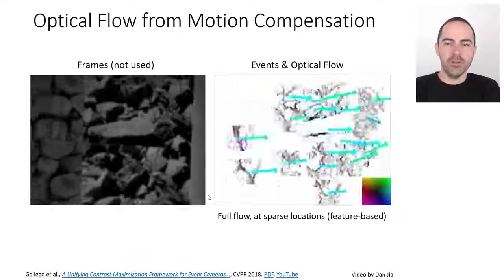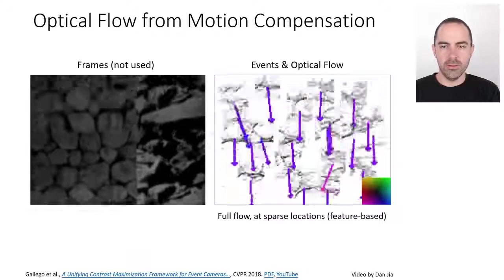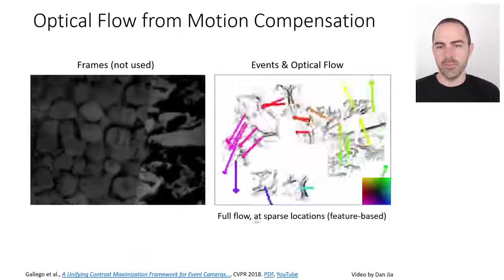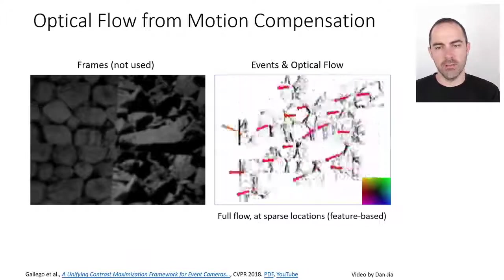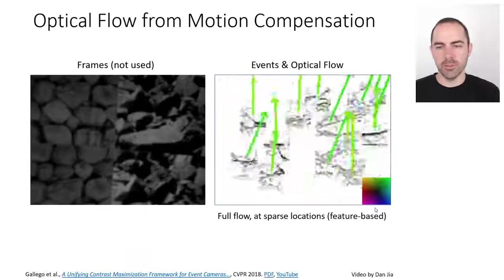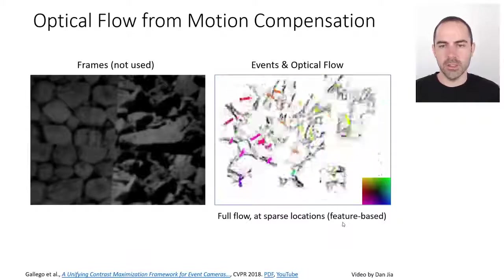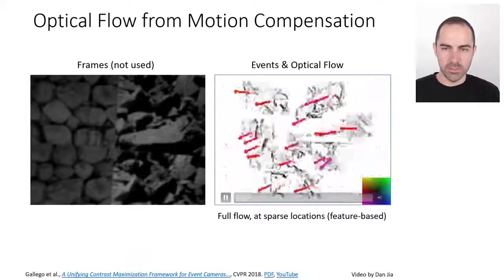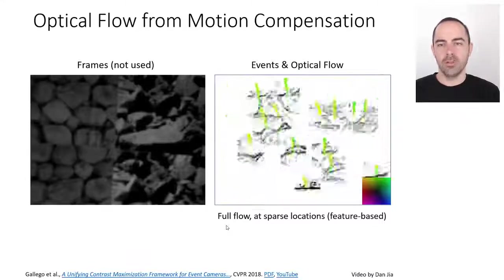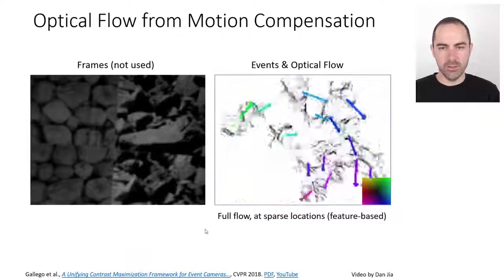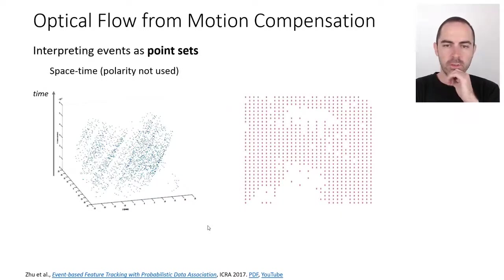An example video shows this done for patches of roughly 20 by 20 pixels. The motion-corrected patches are shown along with flow direction encoded in a color wheel and arrow magnitude representing flow magnitude. This is from a sequence in the event camera dataset from 2017 in the International Journal of Robotics Research. This contrast maximization approach works well for patches, and extensions have been developed to compute optical flow on the full image plane.